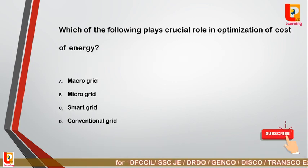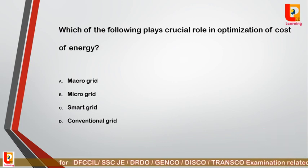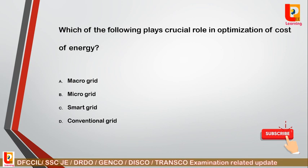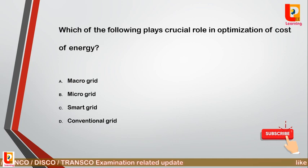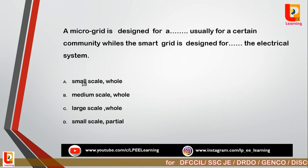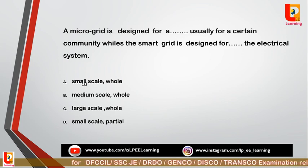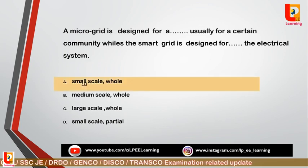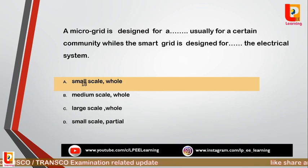Question 4: Which of the following plays a crucial role in optimization of the cost of energy — option A: microgrid; option B: microgrid; option C: smart grid; option D: conventional grid? Correct answer is option D: microgrid. Question 5: A microgrid is designed for a small scale, usually for a certain community, while the smart grid is designed for the whole electrical system. Correct answer is option A.